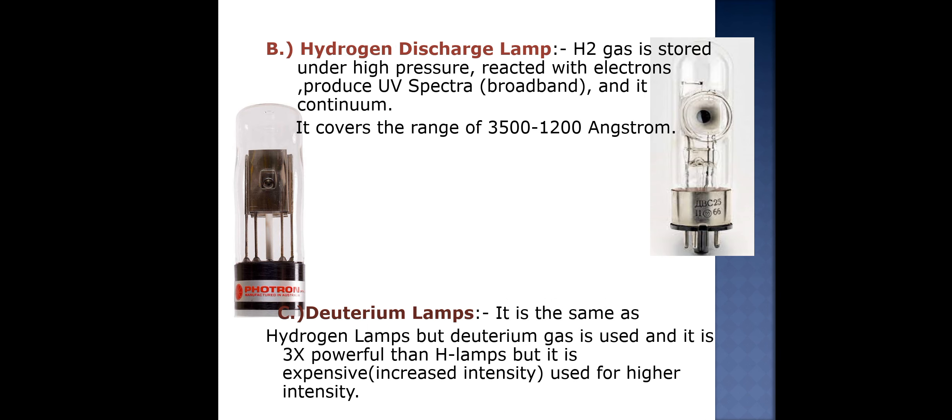The second lamp is the hydrogen discharge lamp, in which hydrogen gas is stored under high pressure and reacted with electrons to produce UV visible spectra. This UV visible spectra is broadband and produced in continuum. It covers the range of 3500 to 1200 angstrom.